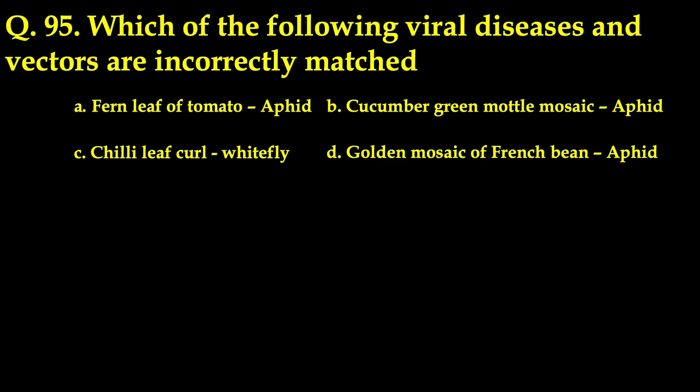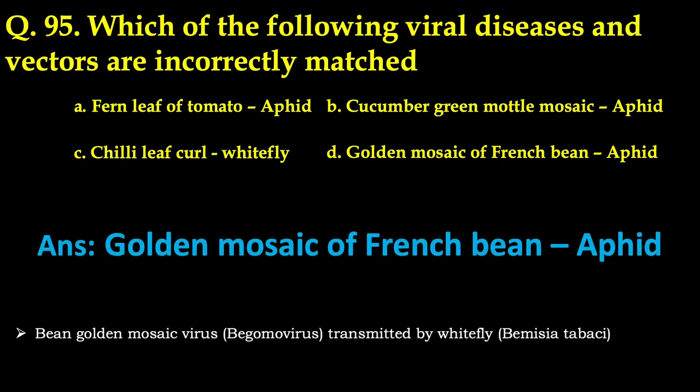The next question: which viral diseases and vectors are incorrectly matched? The incorrectly matched option is D — golden mosaic of French bean transmitted by aphid. All other options A, B, and C are correct. Bean golden mosaic virus is actually caused by a begomovirus transmitted by whitefly Bemisia tabaci.